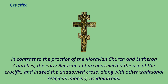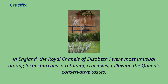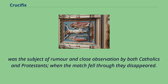In contrast to the practice of the Moravian Church and Lutheran churches, the early Reformed churches rejected the use of the crucifix, and indeed the unadorned cross, along with other traditional religious imagery, as idolatrous. Calvin, considered to be the father of the Reformed Church, was violently opposed to both cross and crucifix. In England, the royal chapels of Elizabeth I were most unusual among local churches in retaining crucifixes, following the Queen's conservative tastes. These disappeared under her successor James I, and their brief reappearance in the early 1620s when James was seeking a Spanish marriage was the subject of rumor and close observation by both Catholics and Protestants; when the match fell through they disappeared.